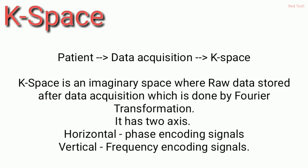K-space is an imaginary space — you can say it is a concept. We think of it as the area where raw data is stored after data acquisition, after data collection. This is where all raw data is stored, which is processed by Fourier transformation. It has two axes: horizontal and vertical.